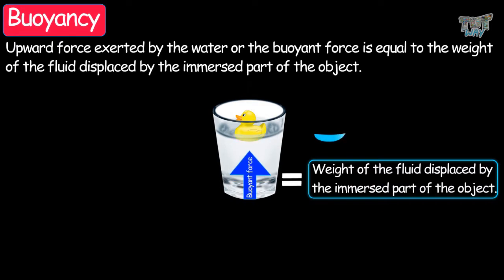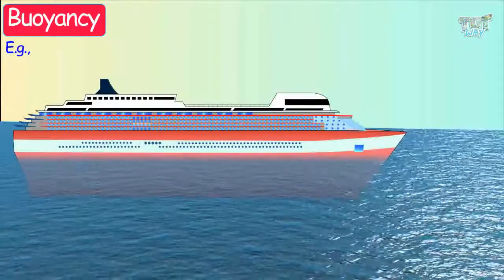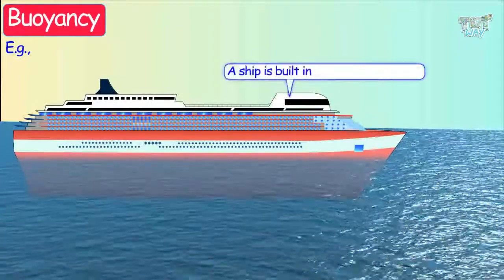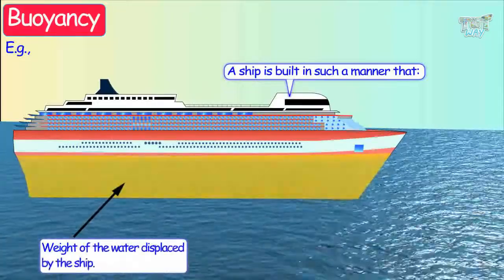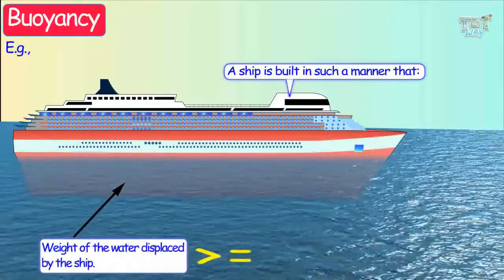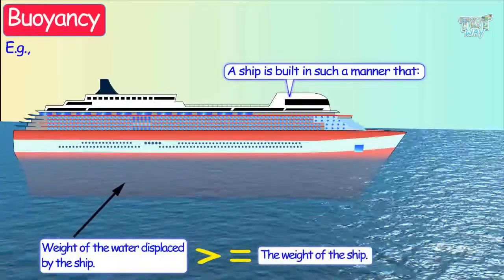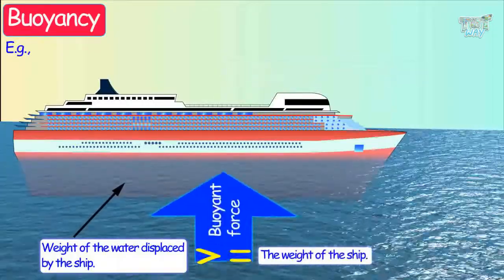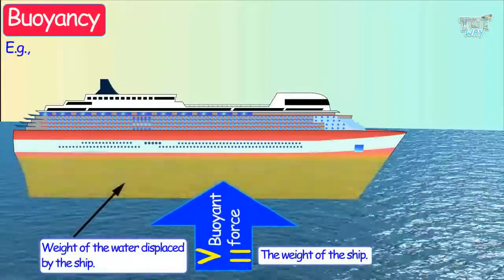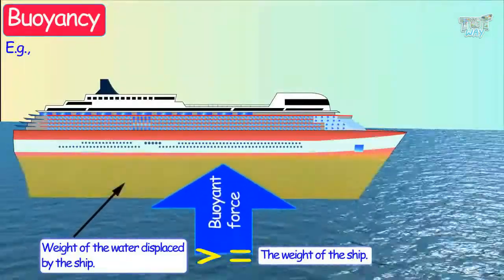Let's understand this with the help of an example — the case of a ship. A ship is built in such a manner that the weight of water displaced by the ship is more than or equal to the weight of the ship. So it experiences a buoyant force equal to or even more than its weight. This is why it does not sink.